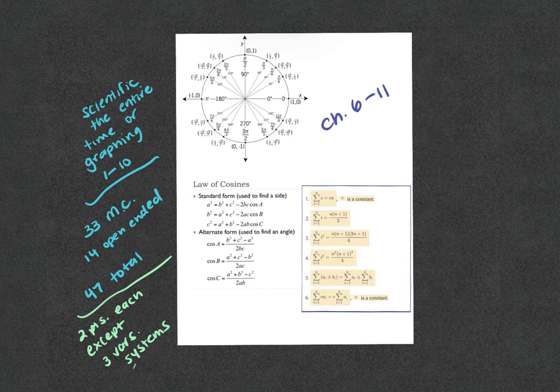This video is going to be part one of your final exam review. What you see in front of you is the reference sheet you're going to get. You'll get your full unit circle, you'll get your law of cosines, and you'll get your summation equations. There are a couple more that are actually built into the test — we'll address those when we get to them, but this is what you'll get for the reference sheet.